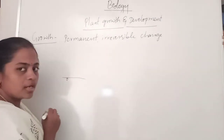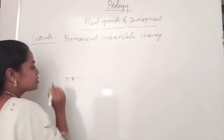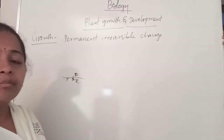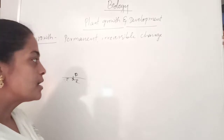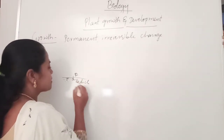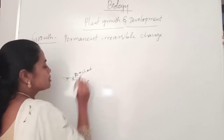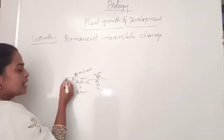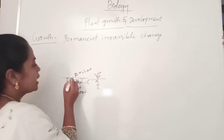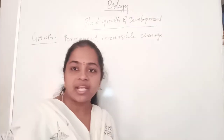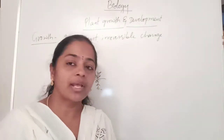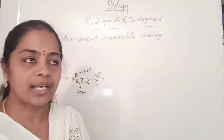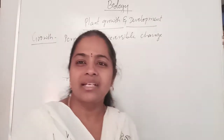Starting with seed germination, the seed sprouts and initiates growth. The first part is the plumule; the lower part is the radicle. The radicle is responsible for the development of the root system. Next comes root formation, then leaves formation. As the plant reaches maturity, it produces flowers, then fertilization occurs, and it produces fruits and seeds. These are all the developmental stages.